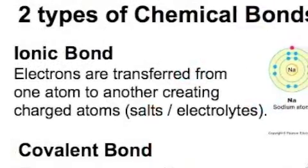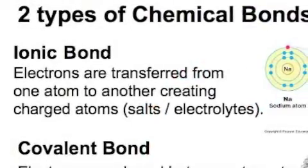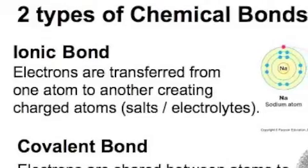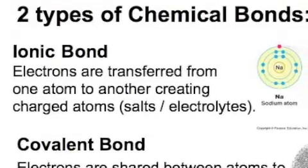Well let's talk about chemical bonds. We have a few types, two main ones, the ionic bond and the covalent bond. Those are the main ones.